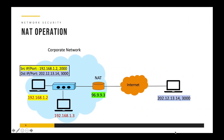Let's see how NAT actually operates. Say this is your corporate network and you are using private IP addresses — for example 192.168.1.2 or 192.168.1.3 — which are not publicly routable. Now say you want to send data to a system on the internet with a public IP address of 202.12.13.4, running an application on port 3000. You create a packet with your own source IP address 192.168.1.2, source port 2000, and the destination IP and port. You then send this packet to the NAT router.